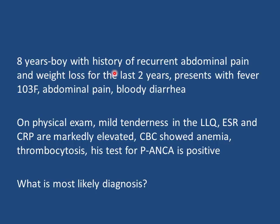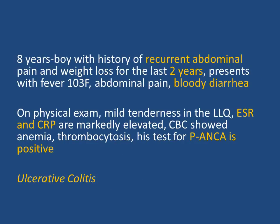Clinical case: an 8-year-old boy with 2 years of recurrent abdominal pain and weight loss, now presenting with fever of 103°F, abdominal pain, and bloody diarrhea. Physical exam: mild left lower quadrant tenderness. ESR and CRP markedly elevated. CBC shows anemia and thrombocytosis. p-ANCA is positive. The keyword is chronicity (2 years) with bloody diarrhea and positive p-ANCA — the most likely diagnosis is ulcerative colitis.